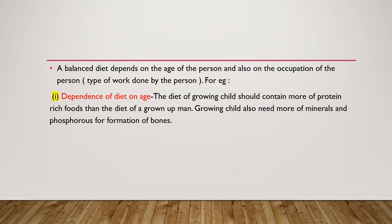Why? Because a growing child needs more protein-rich food as well as minerals like phosphorus for the formation of strong bones. Children who are growing need more and more protein-rich food, which is also rich in minerals like phosphorus, to make their bones strong.